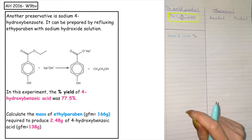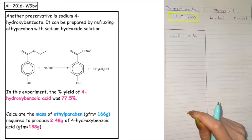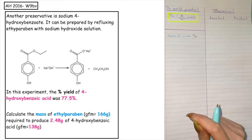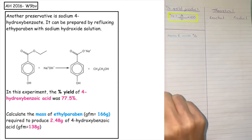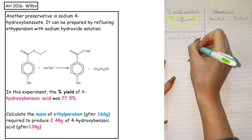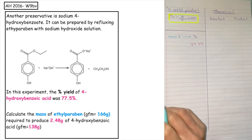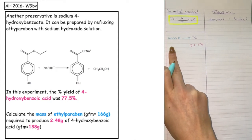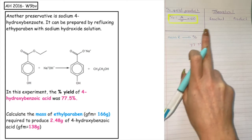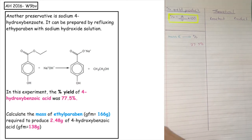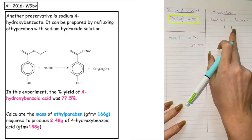This past paper question is from the Advanced Higher 2016 written 9b. Another preservative, sodium 4-hydroxybenzoate, can be prepared by refluxing ethyl paraben with sodium hydroxide solution. You can see that you are given a balanced equation. In this experiment, the percentage yield of 4-hydroxybenzoic acid, which is our product, is 77.5%. We want to calculate the mass of ethyl paraben that can produce a total of 2.48 grams of our product. From the balanced equation, there is a one-to-one ratio between our reactant and our product.